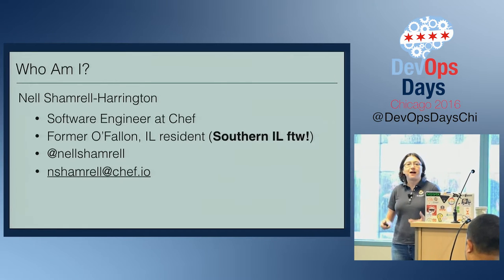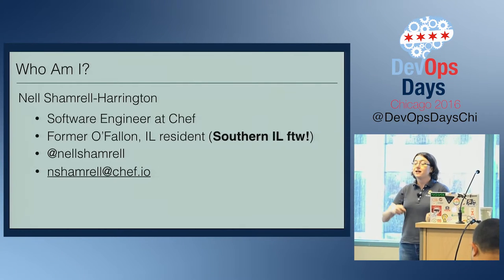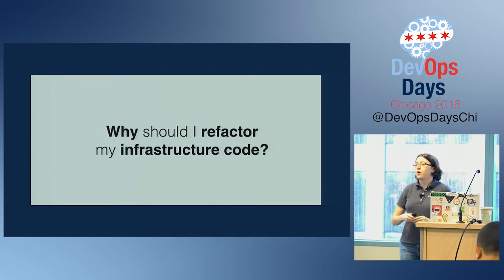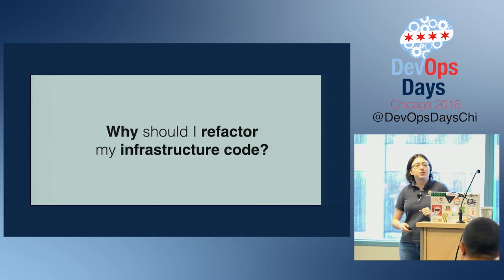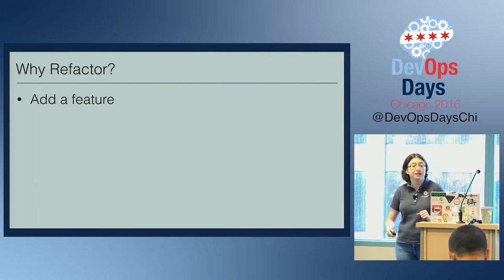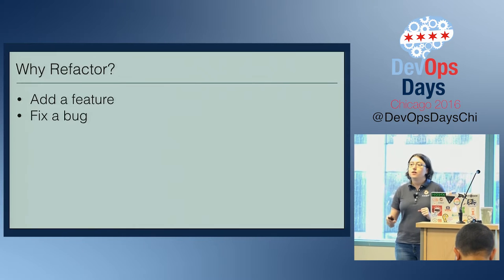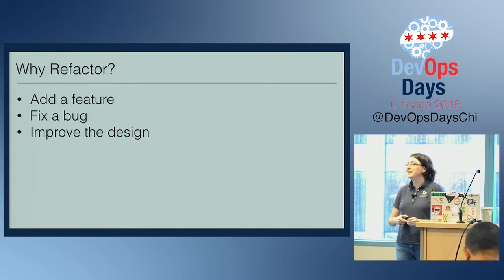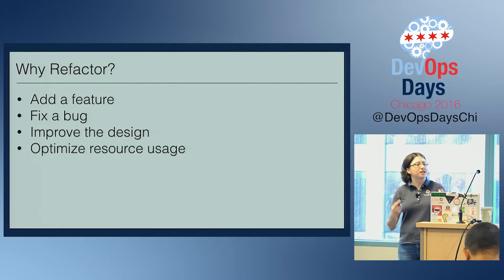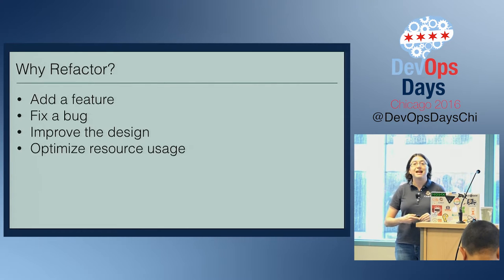In my work at Chef, I have refactored a good deal of infrastructure code — some good, some bad — and I would like to share those lessons with you today. You might find yourself needing to refactor when you need to add a feature, when you need to fix a bug, when you need to improve the design of the code, or when you need to optimize resource usage — things like memory, hard disk drive space, and in our example, AWS resources.